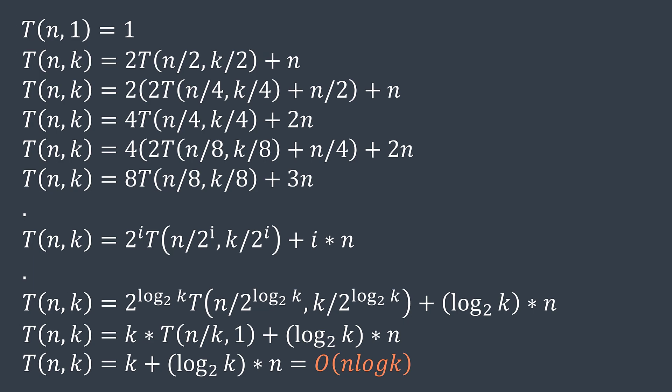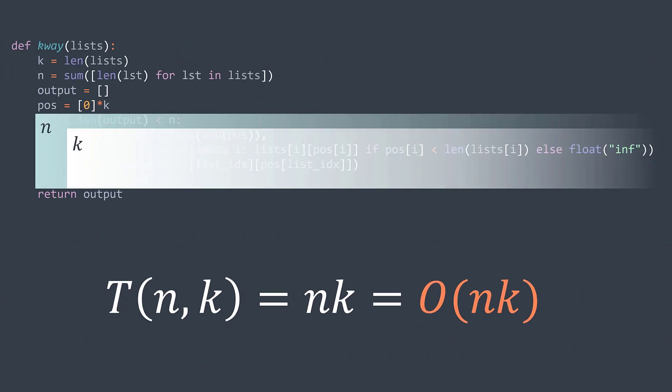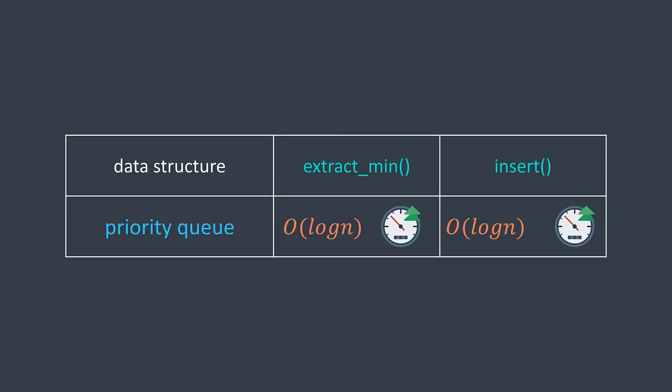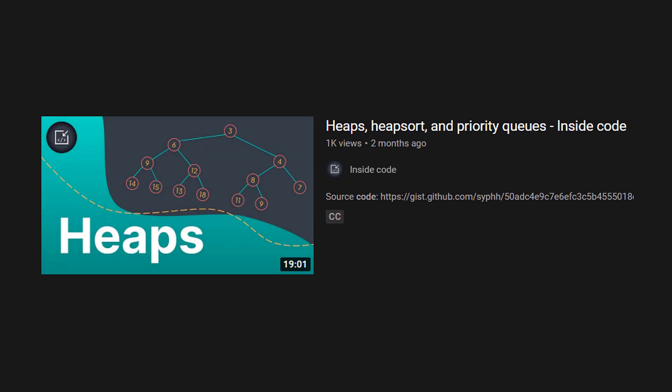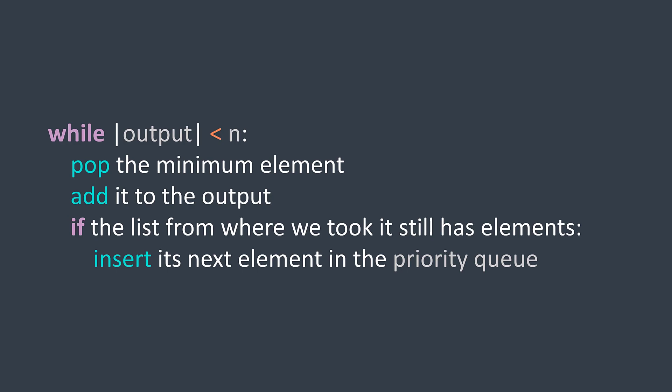We still have one more solution to discover. In the previous naive solution, at each iteration we were traversing all k lists to find the minimum, resulting in O(n·k) — too slow. But what if we can find the minimum in less than O(k)? We can do so by using a priority queue. If you don't know what a priority queue is, I suggest you watch our previous video. When implemented with a heap, it gives the ability to insert and extract-min in O(log n) time, where n is the number of elements in it. In our problem, we use a priority queue that initially contains k elements — the first element of each list. At each iteration, we extract the minimum, add it to our output, and if the list from where we took the element still has elements, we insert its next element into the queue.